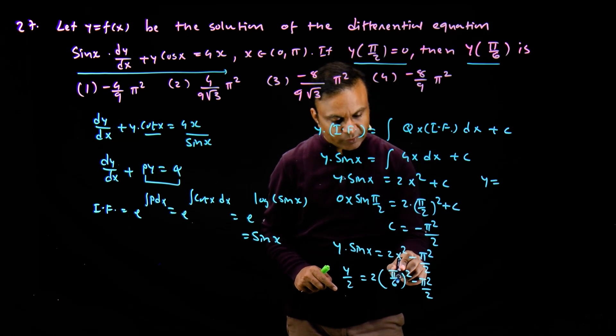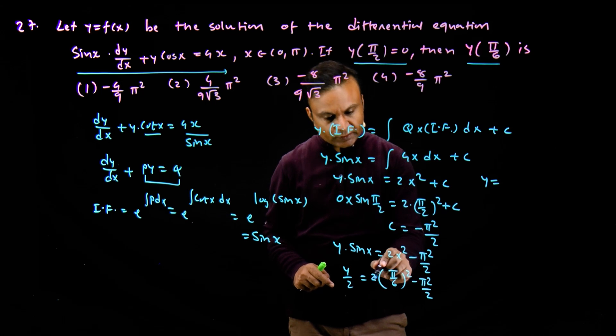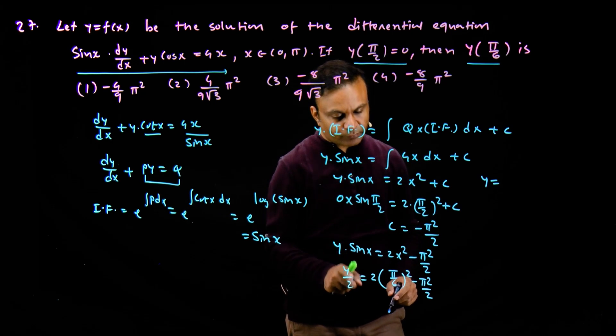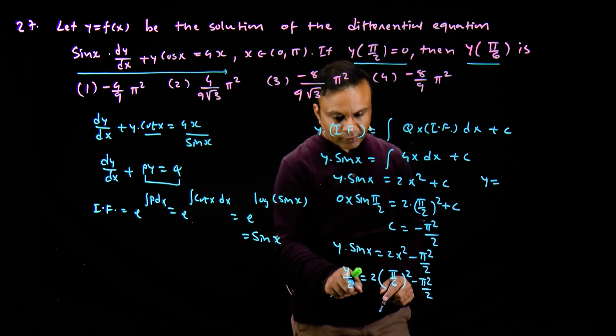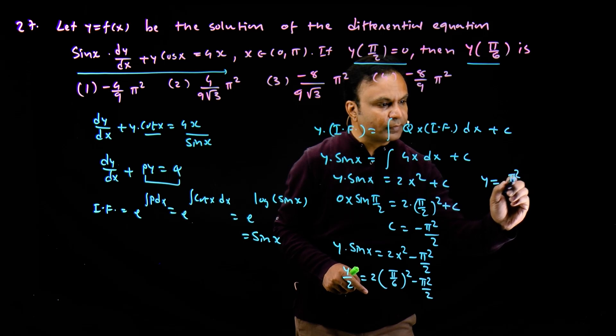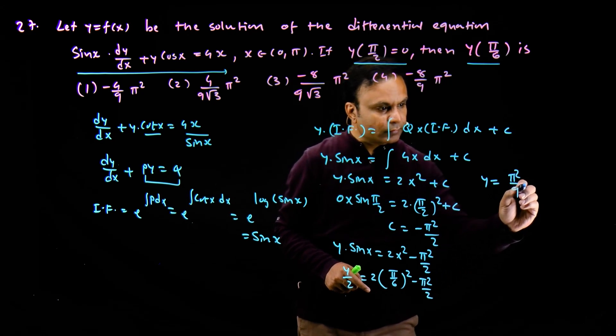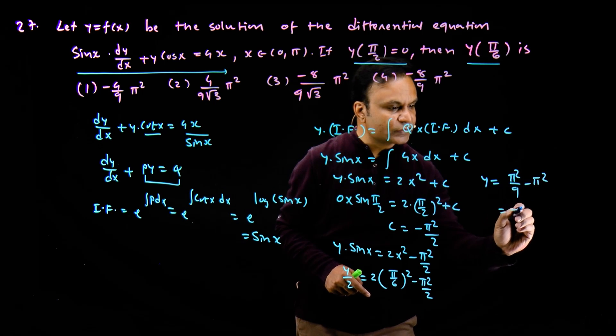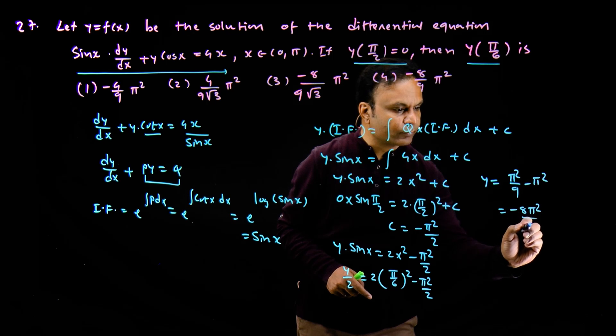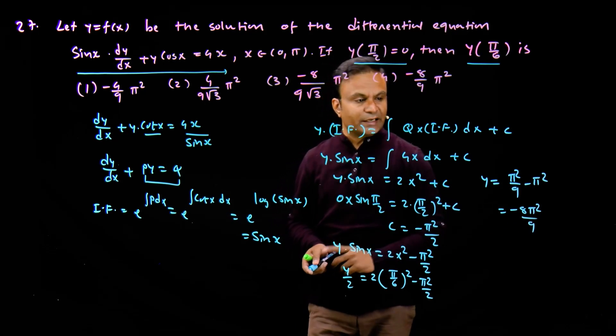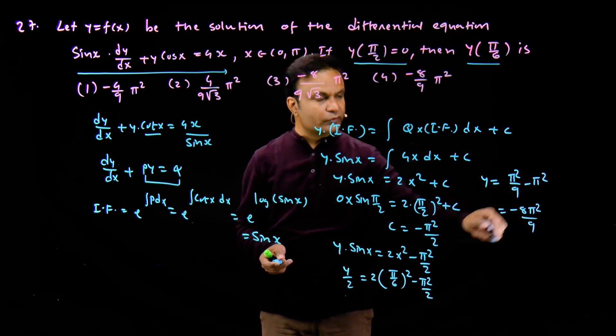Here we get pi square by 36, there's a 2 here, so pi square upon 18. 2 gets multiplied, so this becomes pi square upon 9 minus pi square. This is minus 8 pi square upon 9.